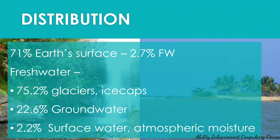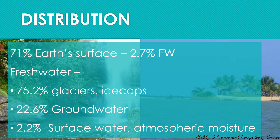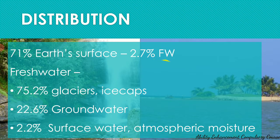It is 22.6 percent groundwater which is actually available for use by the human population. We also have 2.2 percent of surface water that includes rivers, streams, and atmospheric moisture. All of this comprises the 2.7 percent fresh water available for use. As you can see, the available water is very less, and that is the major reason for water crisis even amongst big countries.